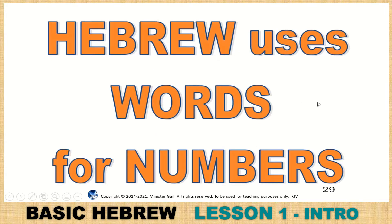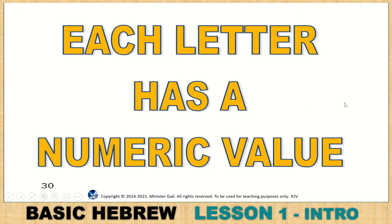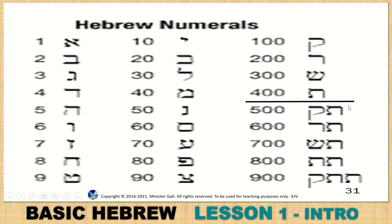Hebrew uses words for numbers in the Bible. Each letter has a numeric value — I will go over this more thoroughly during the lesson. Aleph has a value of 1. Then values continue through the letters. Qof is 100, Resh is 200, Shin is 300, Tav is 400.